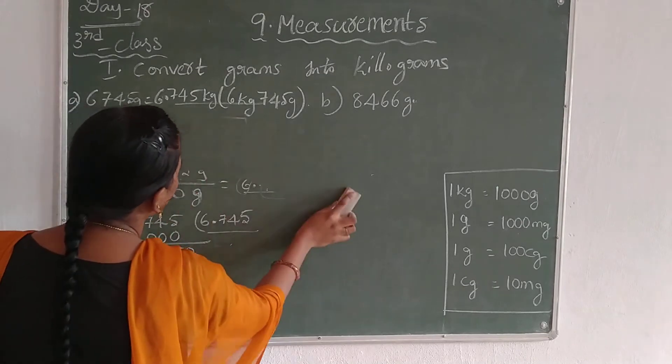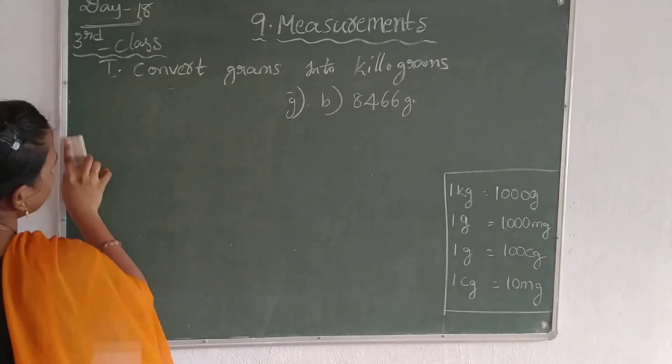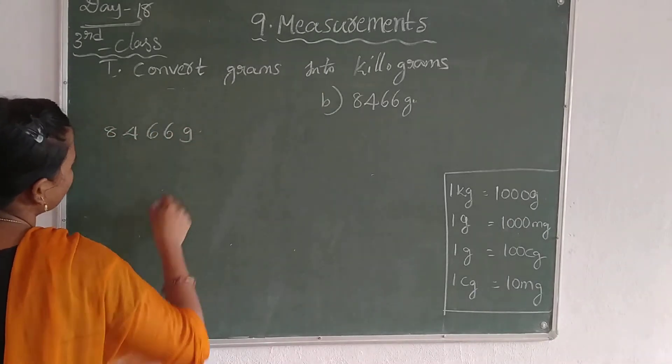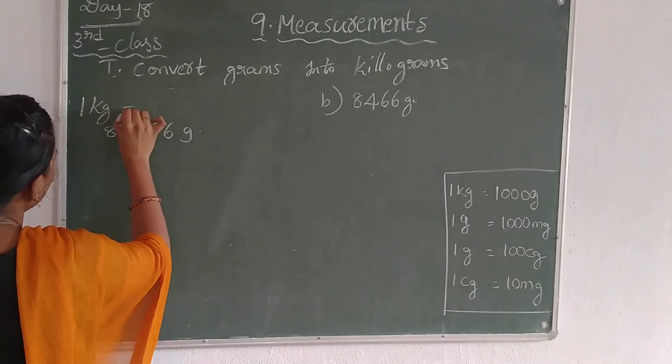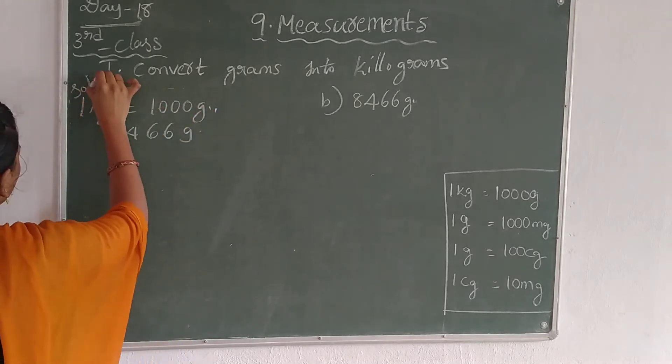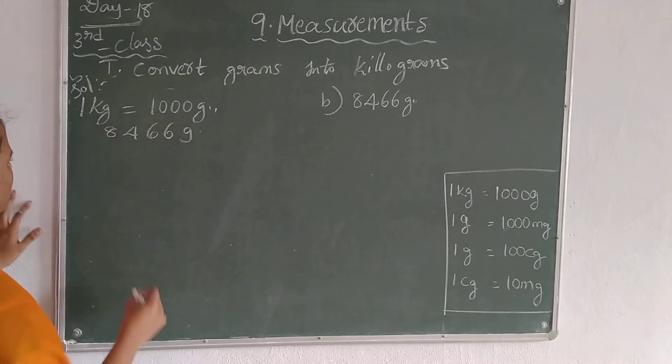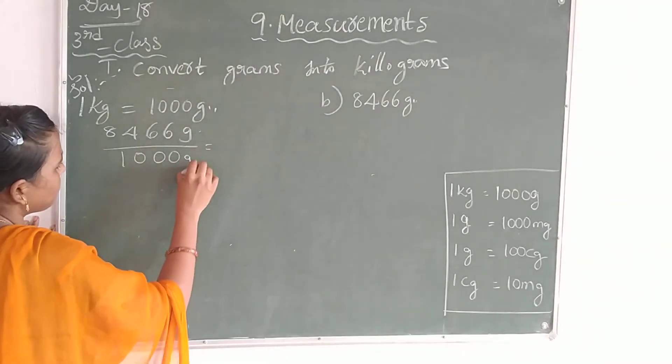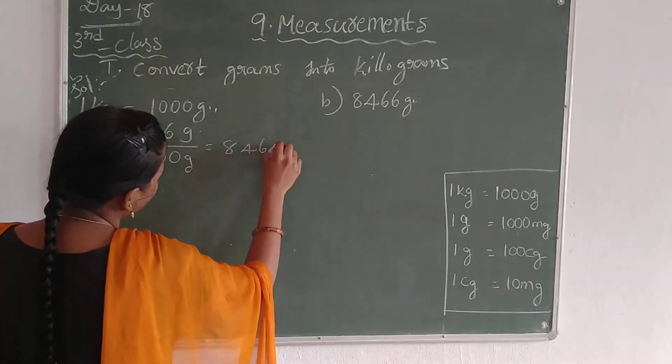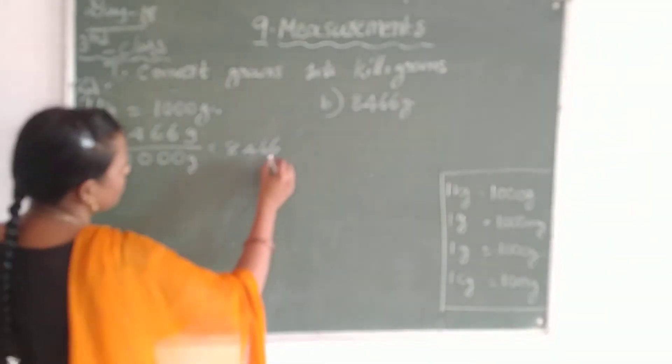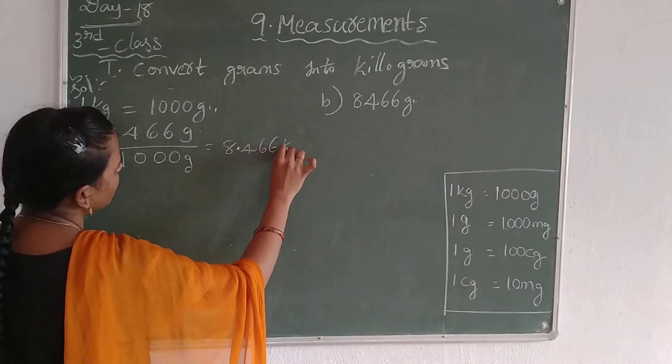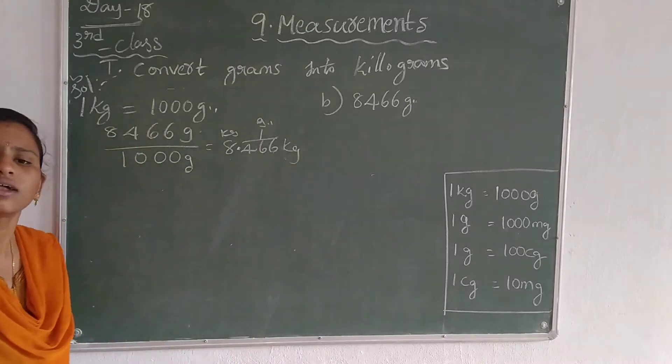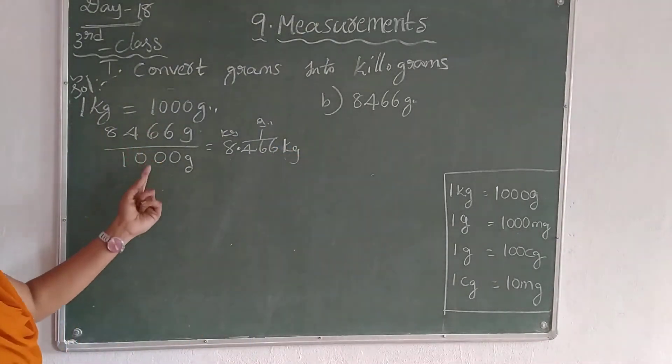Let's see this one. I will do this one. Take the number 8466 grams. First write 1 kg equals 1000 grams, so 8466 by 1000. Write the numerator here: 8466. How many zeros? 3 zeros. So count 1, 2, 3, point. These are the kilograms, this is grams. So 8.466 are the total kilograms.